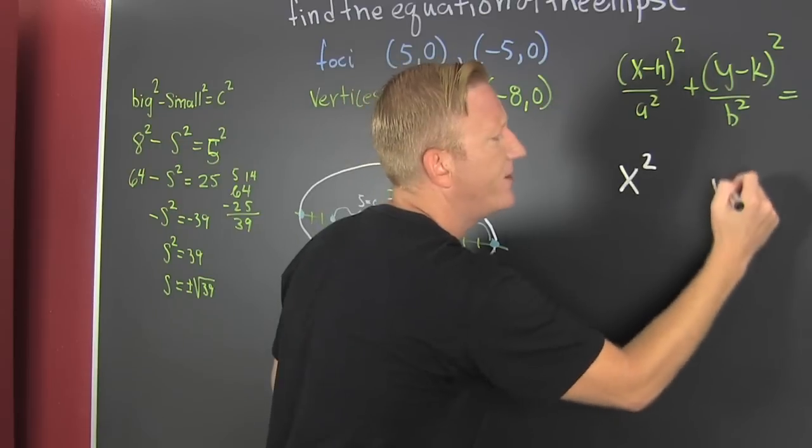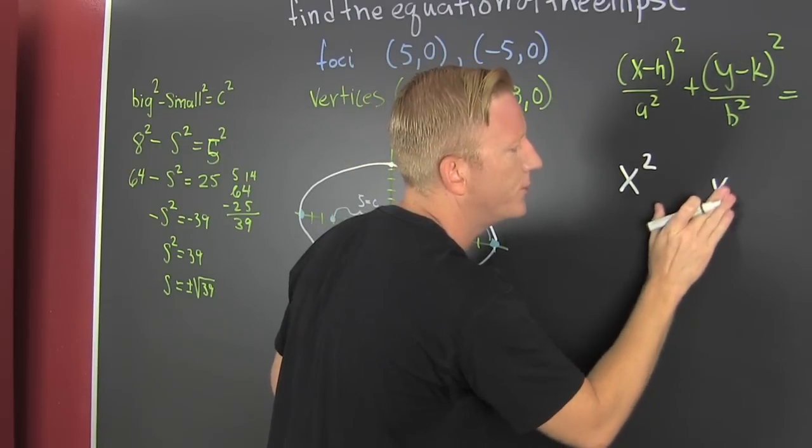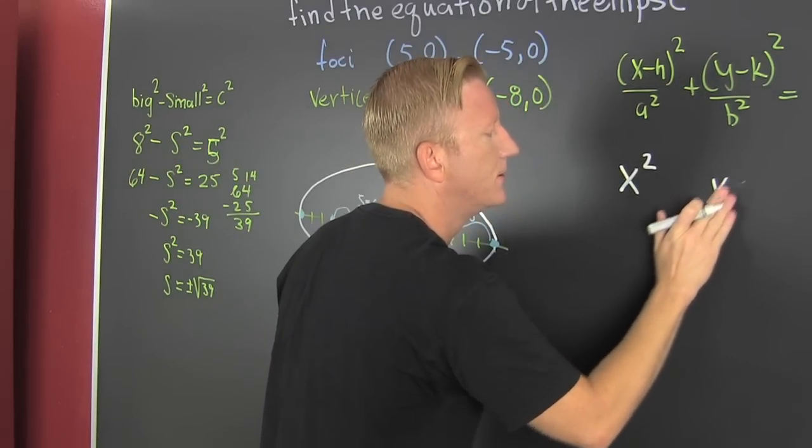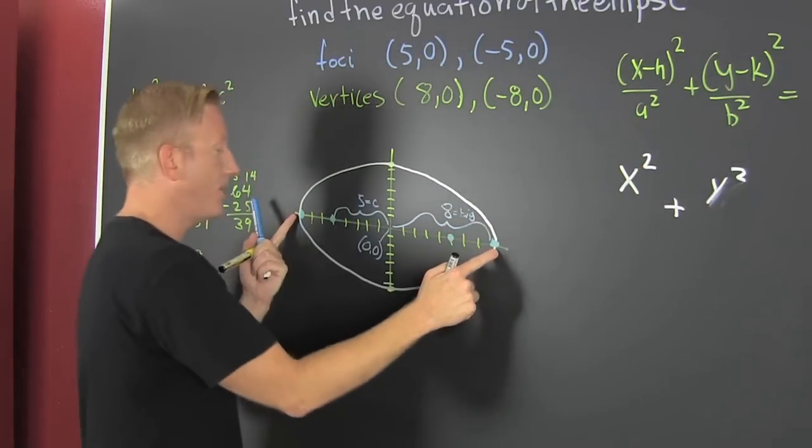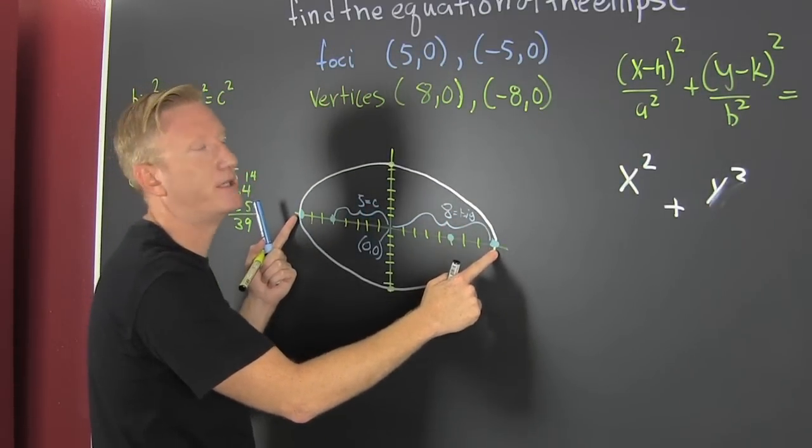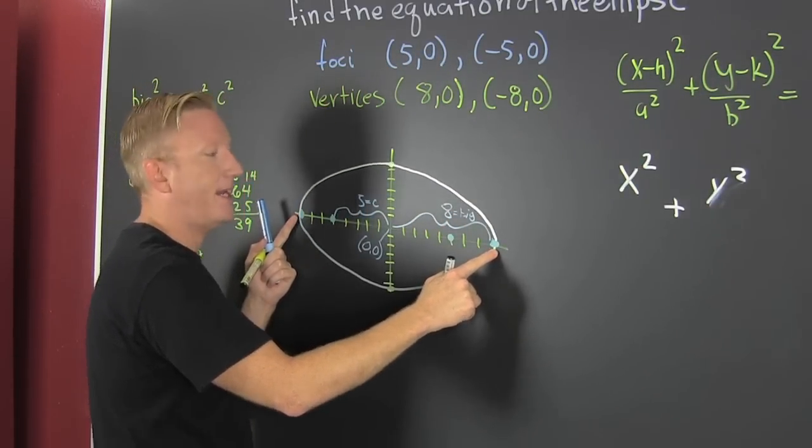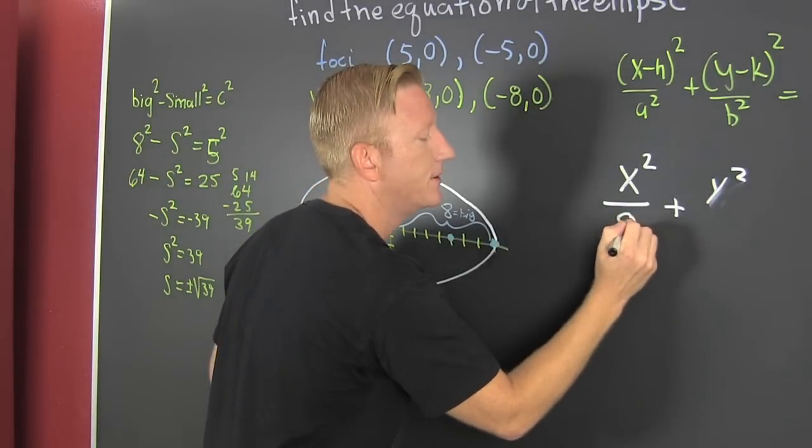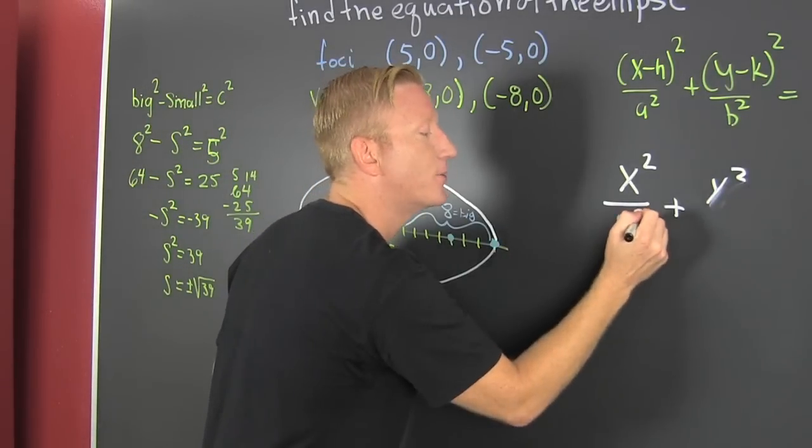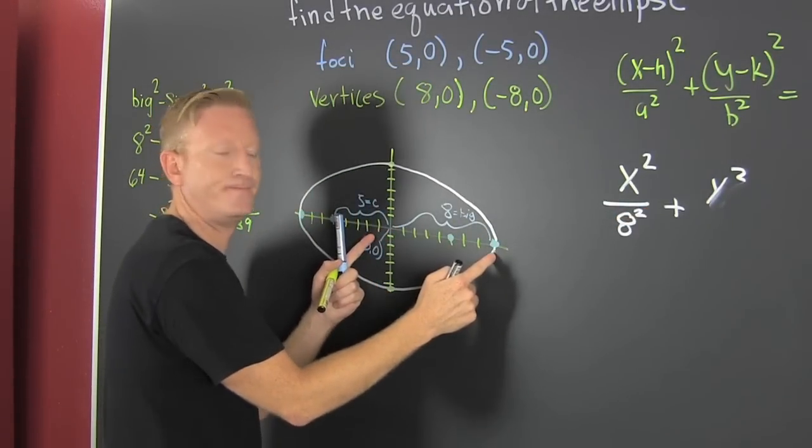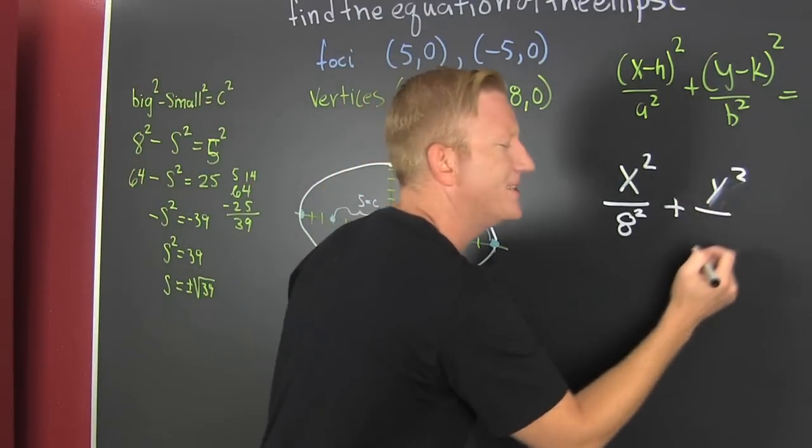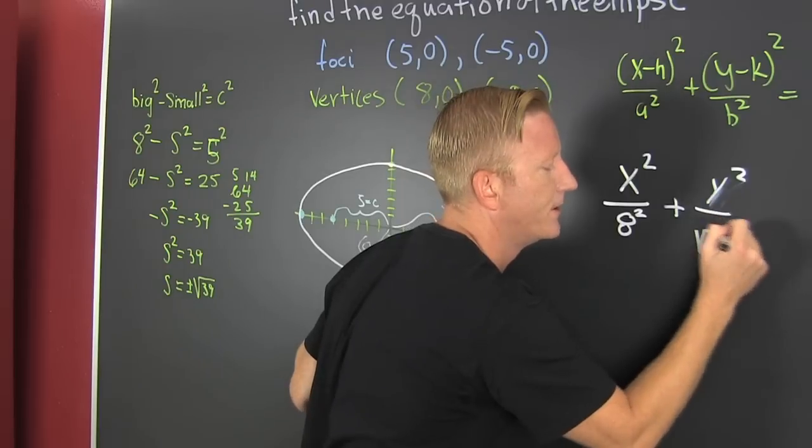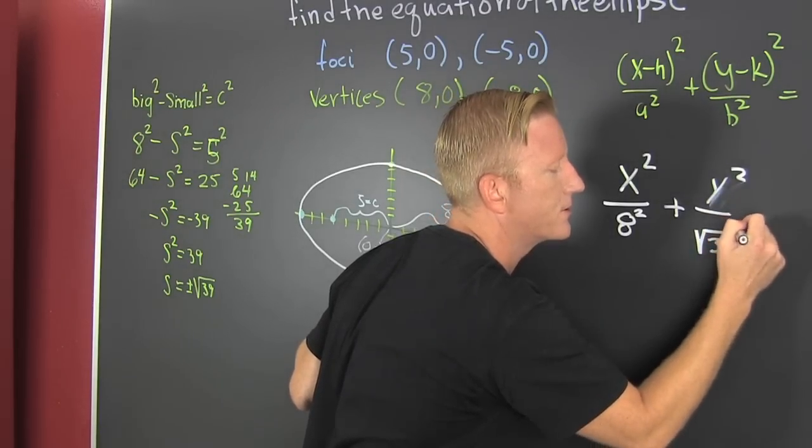So then I have an X squared, I have a Y squared. There's a plus in the middle. My A, that's my big one. I know your book probably says B is the big one or whatever. But 8. Great. It's actually 8 squared. And then my small, square root of 39, seems like such a curious number. Squared?